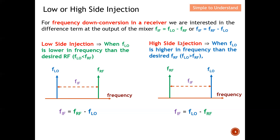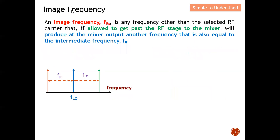In short, just look at the positions of RF and LO, and check the location of FLO — whether it is at high or low frequency. If it's at low, we call it low side injection; if it's at a higher frequency, we call it high side injection. You may have your own way to remember, but that's my suggestion.